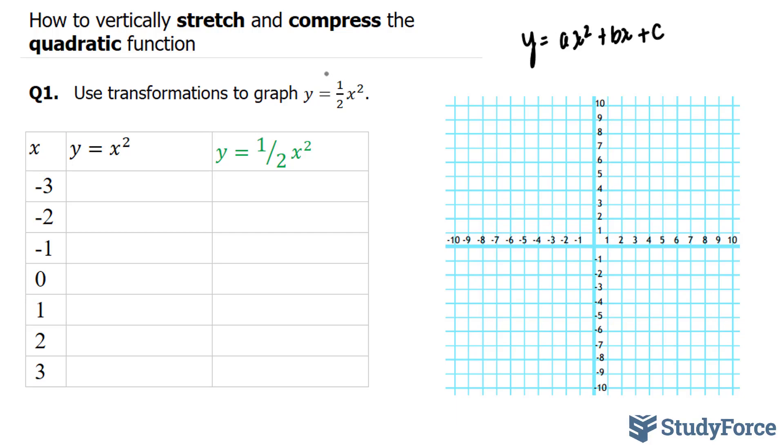Now in our case, in this equation, one half represents our a, so what we'll be investigating is what this a value does to the shape of a parabola. To investigate this, I'll start off by finding my y values for the plain y equals x squared quadratic.